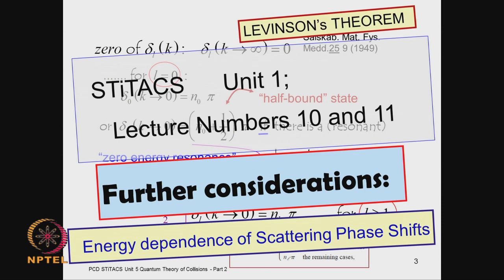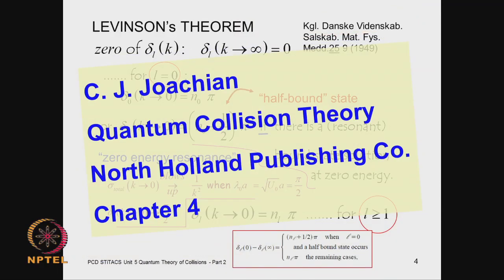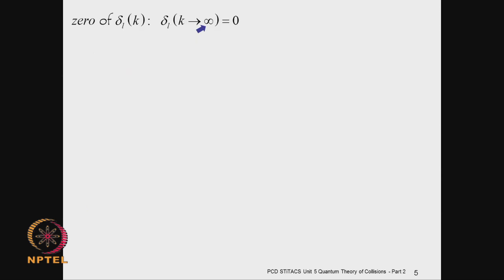We know the low energy limit where k tends to 0, but when k is not quite 0 but still in the low energy regime, what is its energy dependence? We are now getting into details beyond the Levinson theorem. The phase shifts are measured with reference to a certain zero of the angle — the high energy limit of the phase shift — and as k tends to 0 the phase shift goes to 0 for the l-th partial wave.